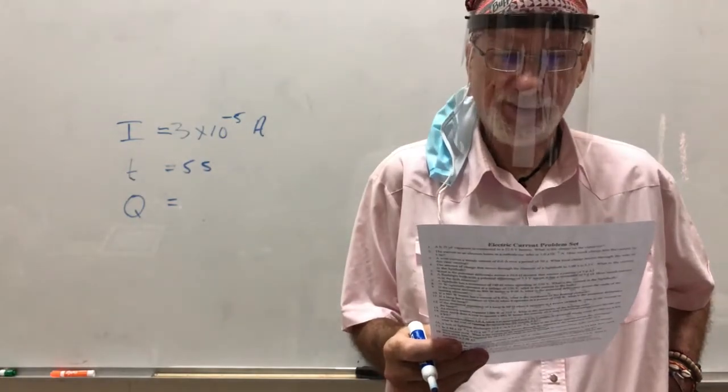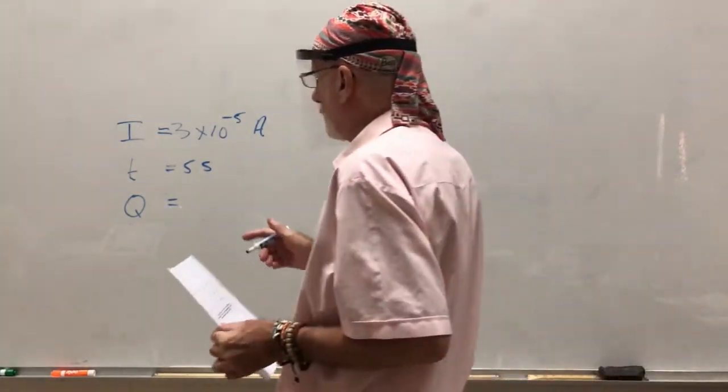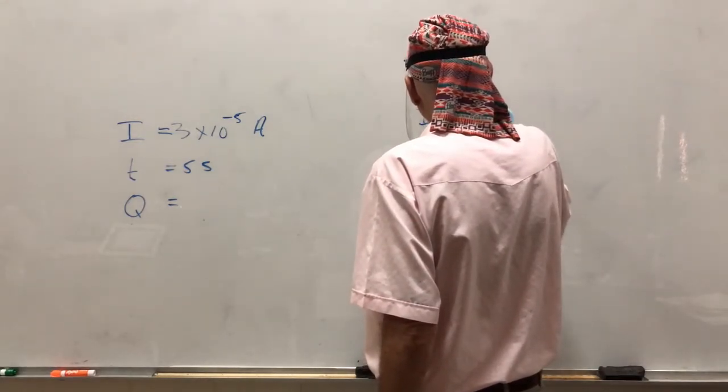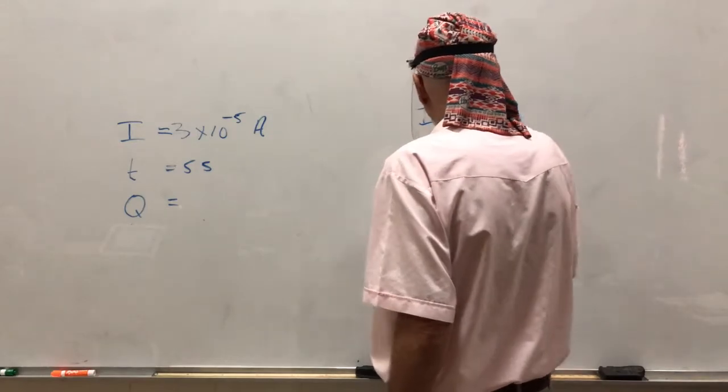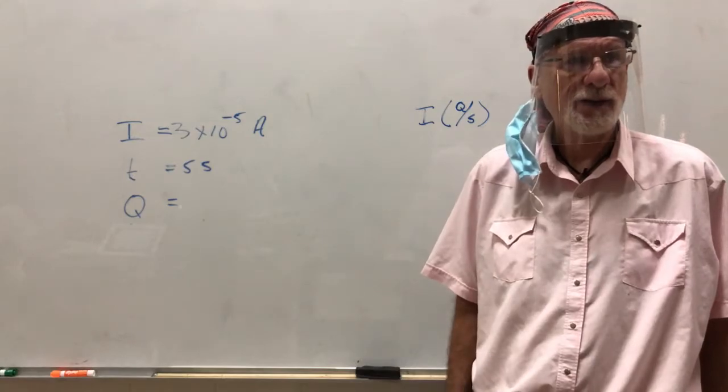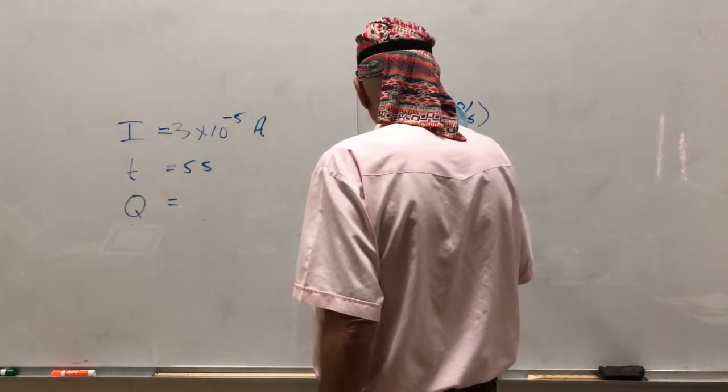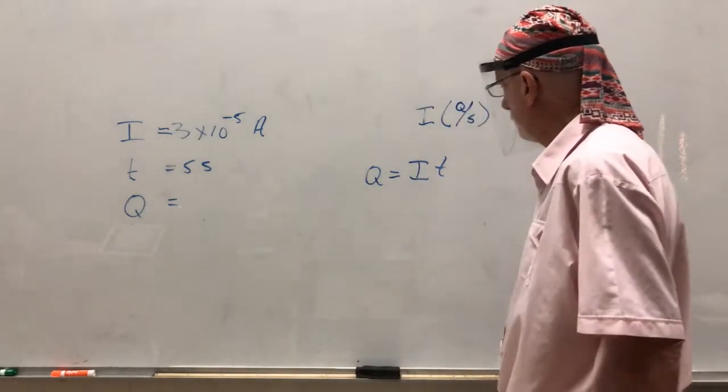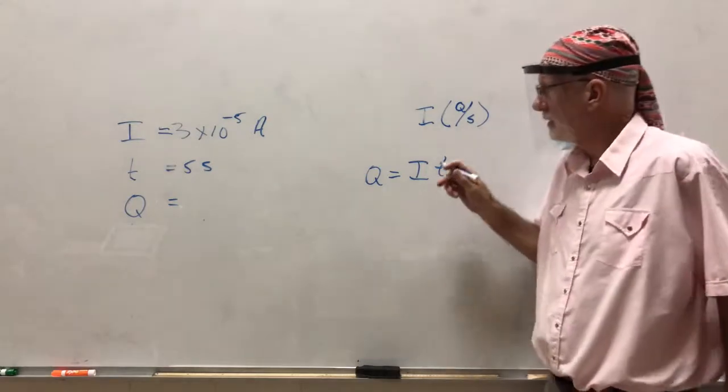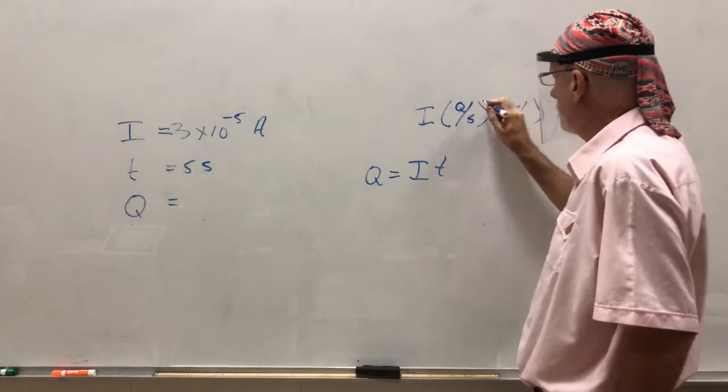Q equals current times time. That's right. Because current, I, is actually charge per second. That's what current is. It's how much charge per second there is. So if I multiply that by time, if I multiply I times T, current and time, then the time drops out. Time cancels and you'll have charge.